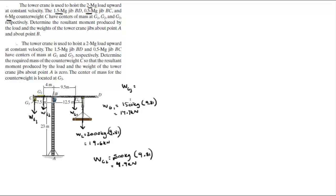— 6 megagrams, which is 6000 kilograms, times 9.81, the acceleration of gravity, and it comes out to be 58.9 kilonewtons. Now that you have all four forces, you can calculate the torque by multiplying by each of the lever arms.